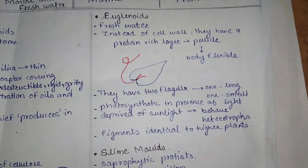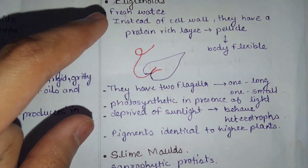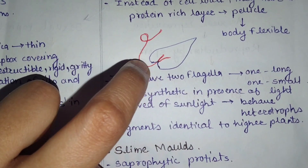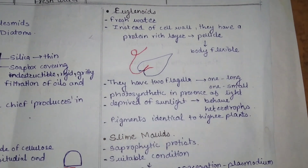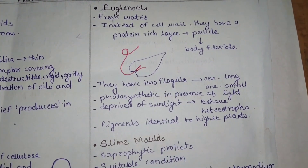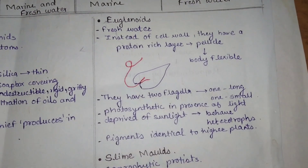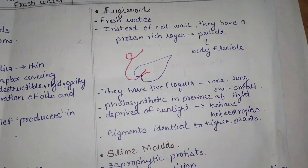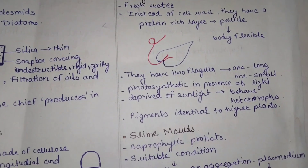Looking at the Euglenoid figure, they have two flagella — one long and one short. The short flagella is inside the body. A common exam question may state that Euglenoids have two equal flagella, but that is incorrect because one is short and one is long — they are unequal.